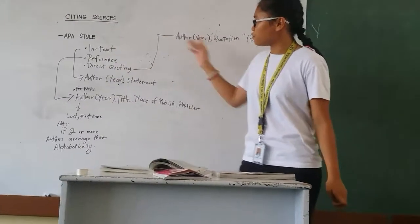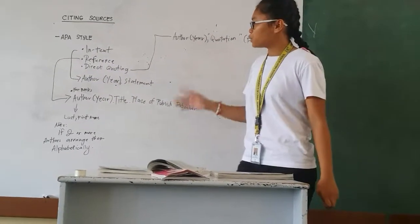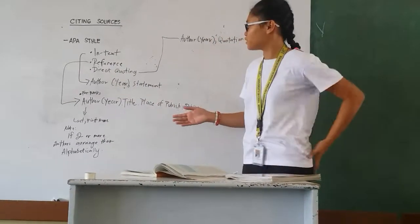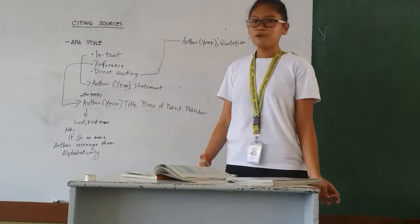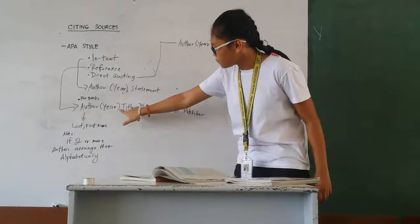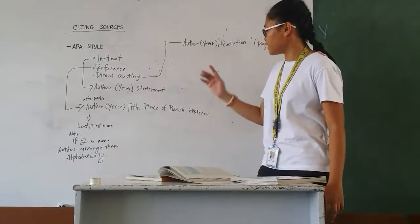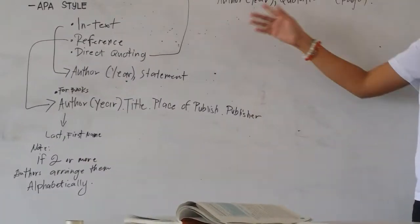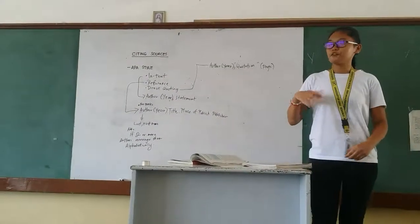The next is the full reference entry. The form for a book includes the author, year, title, and place of publication. Then there is the direct quotation form, which includes the author, the year, the citation, and the page number. That is all for the forms of APA citation.